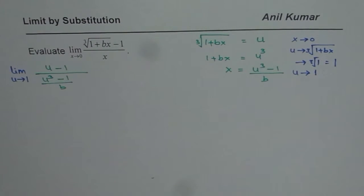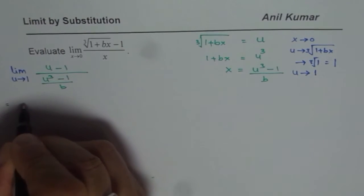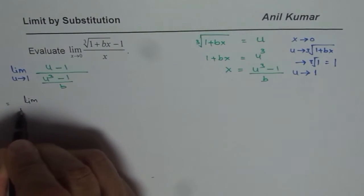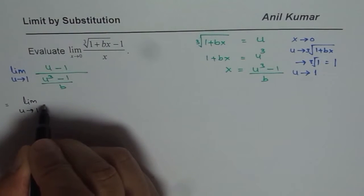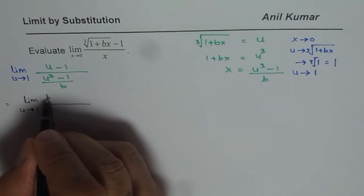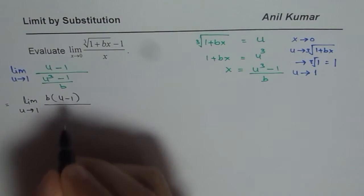Now let us simplify this. This could be written as limit u approaches 1, and then we can multiply by b in the numerator times u minus 1.